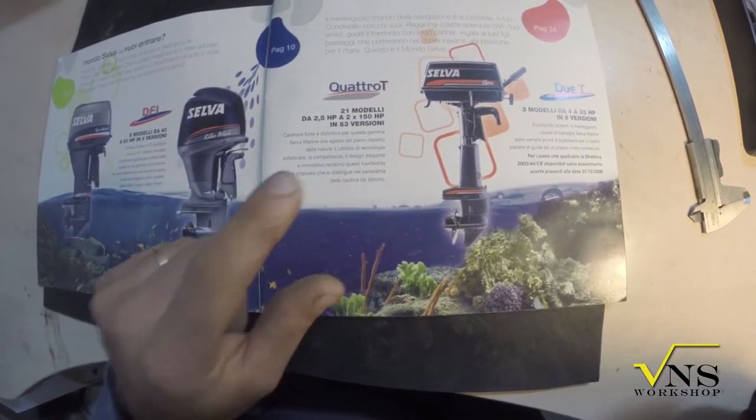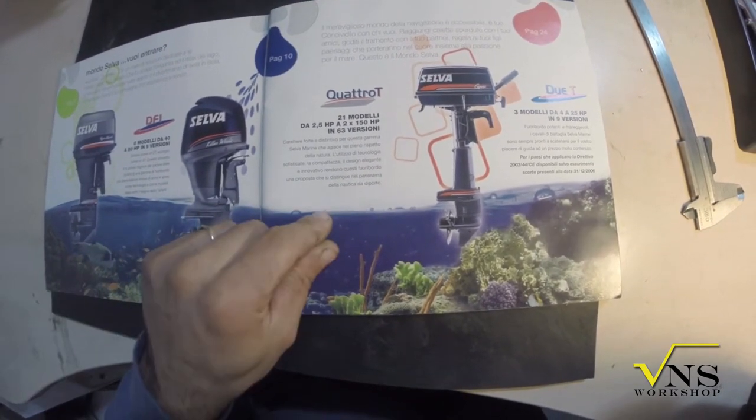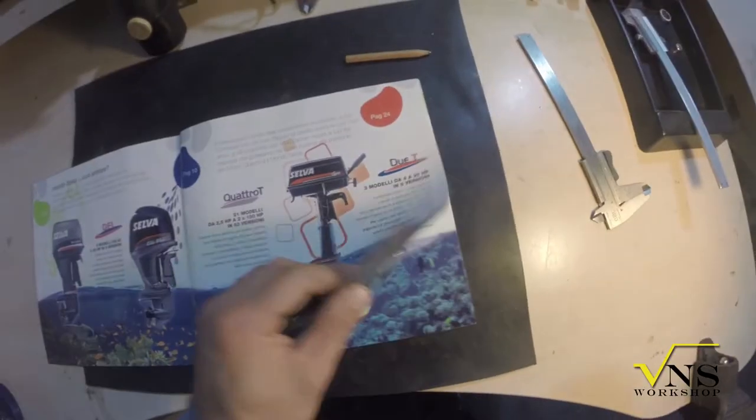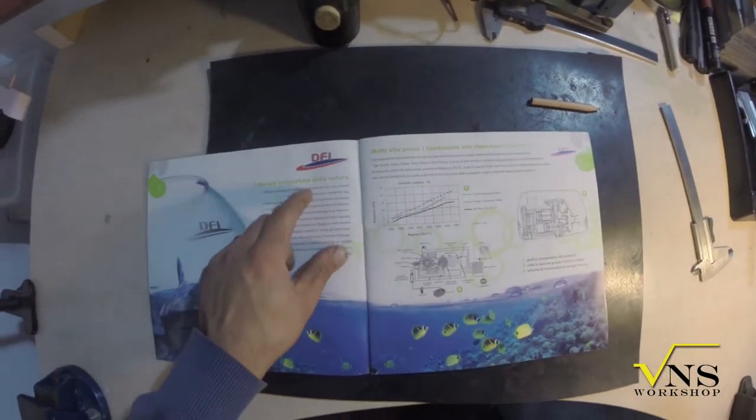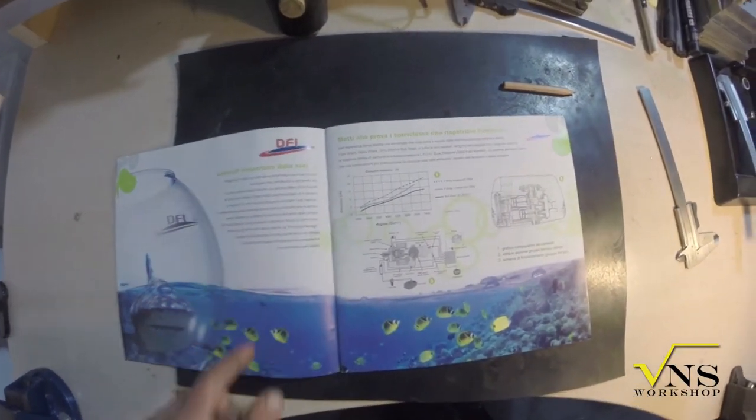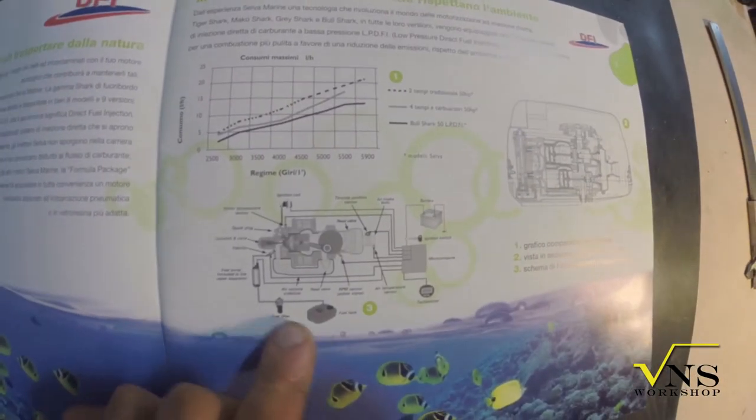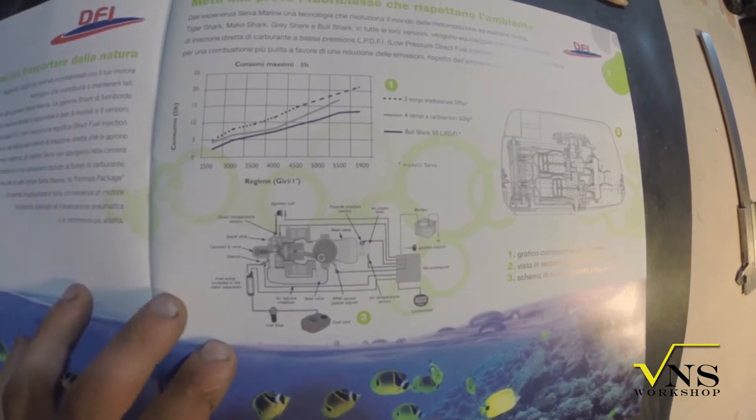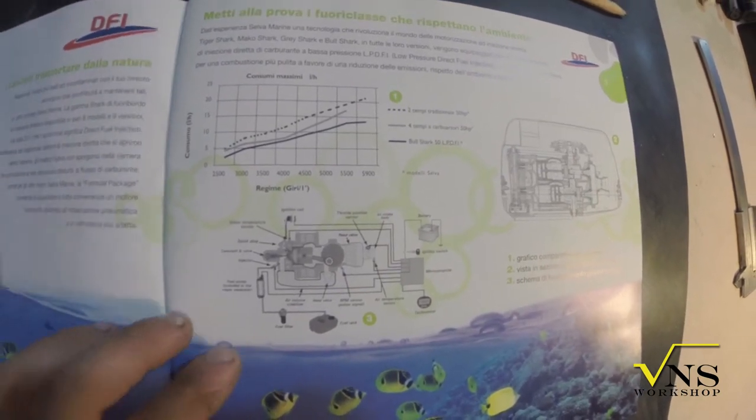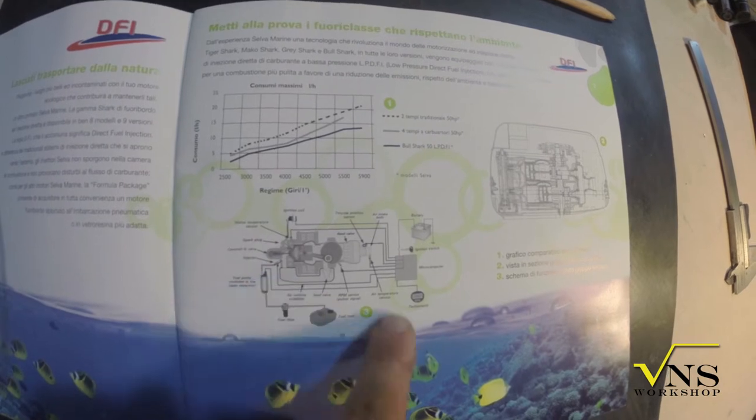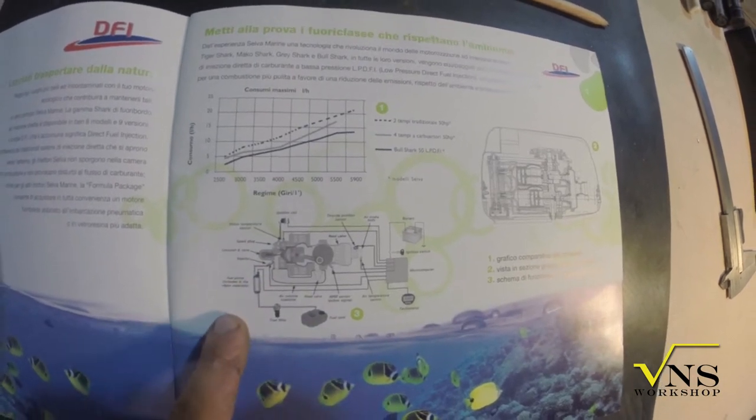The first enemy of two-stroke in our everyday application. But what I found interesting is the DFI system. I read about some low-emission two-stroke. I don't know if you can see with good quality on the camera, but this is the schematic of this engine.